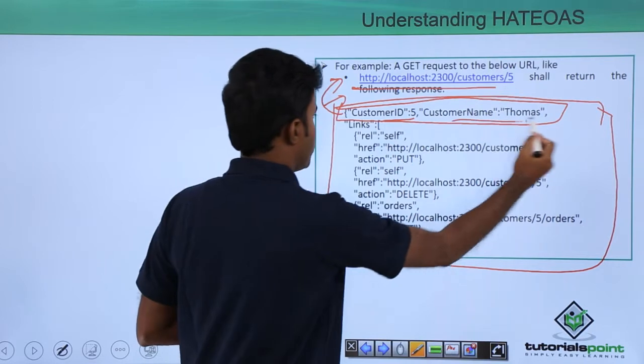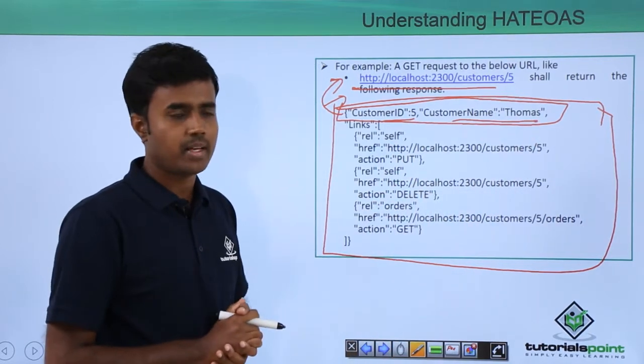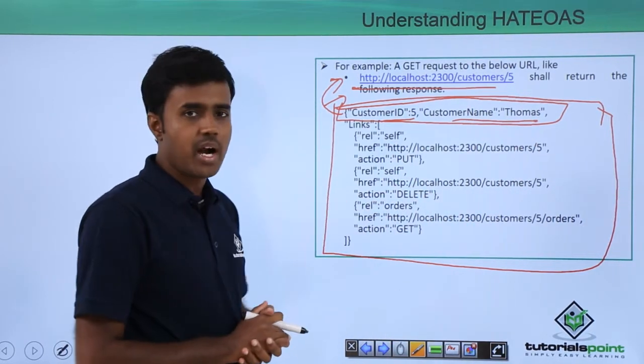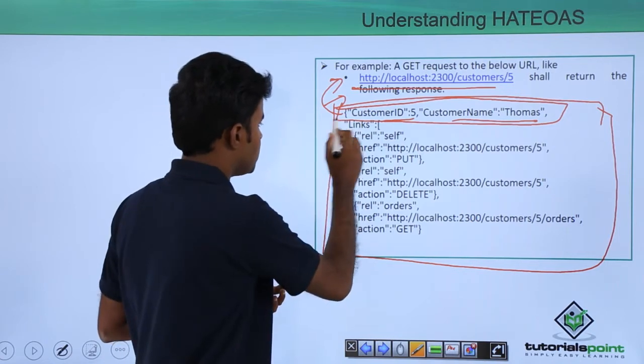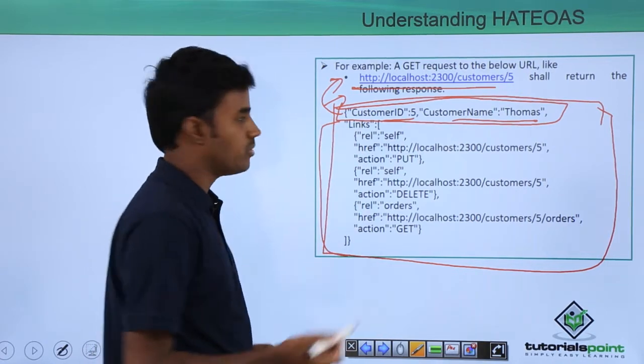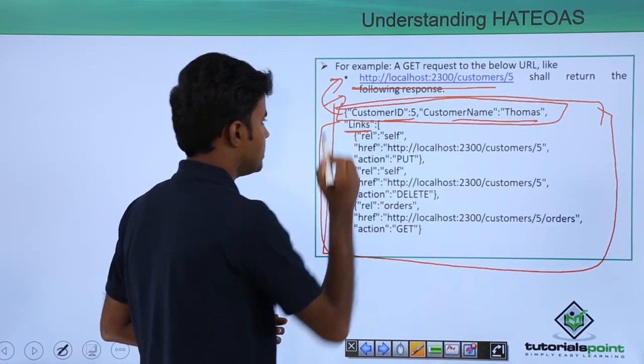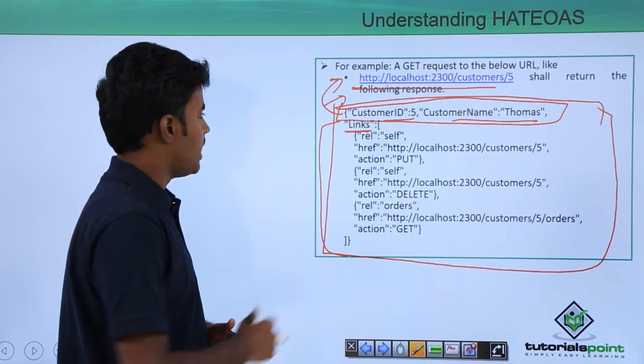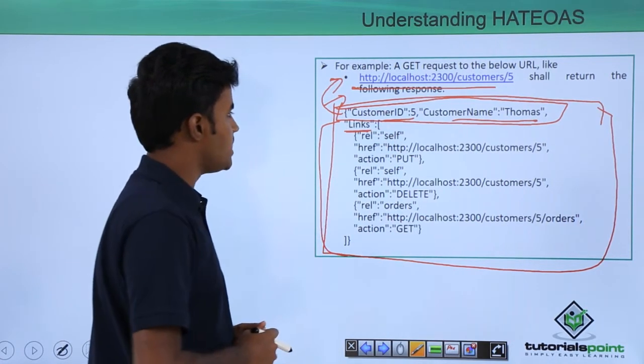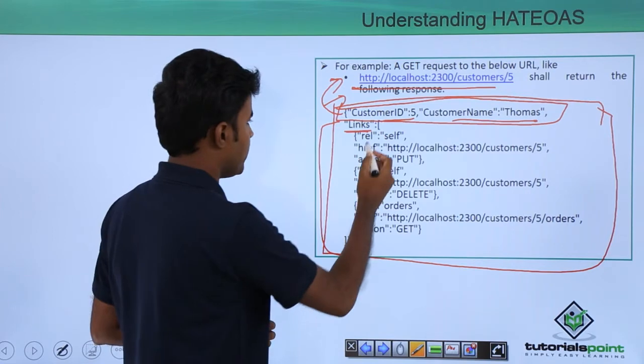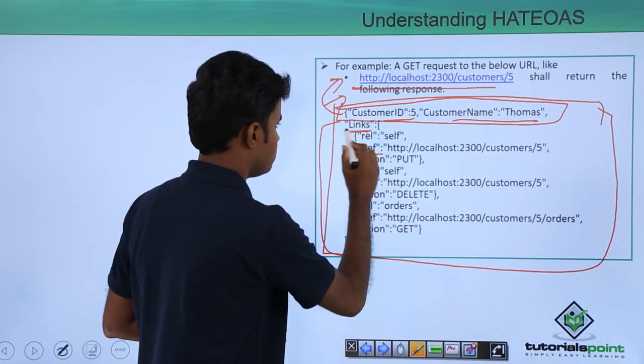The most important part is the HATEOAS part, which is the remaining part defined with the links tag. Within that links array, you have several different elements. For example, there is an element to self.